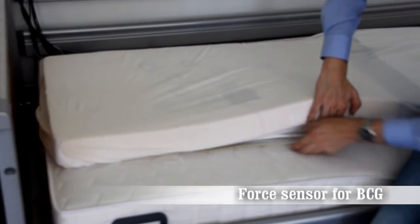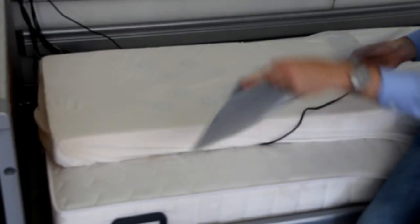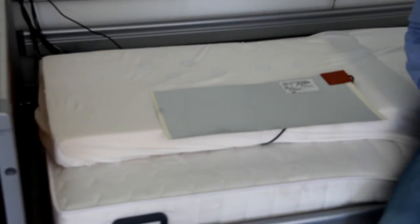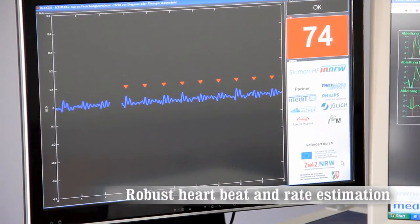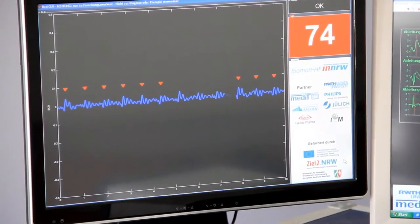In this prototype, the BCG is measured by this thin film sensor which can be placed underneath the mattress and which registers even the tiny vibrations caused by the circulation of blood. Sophisticated signal processing methods enable the robust and reliable extraction of heart rates from these vibration signals.